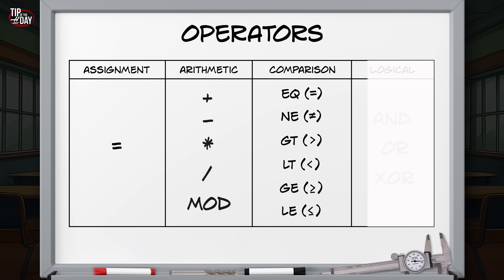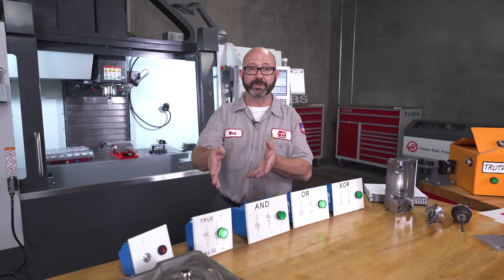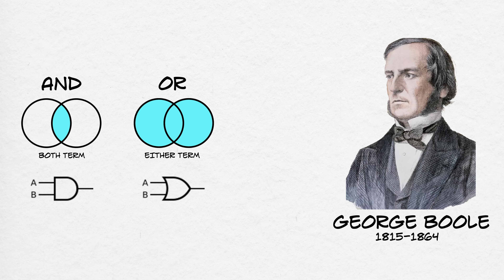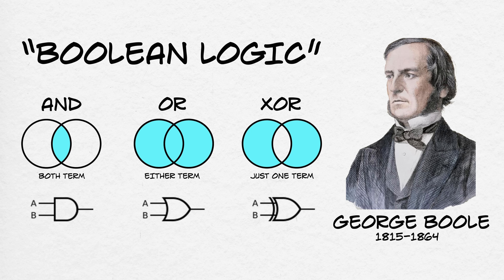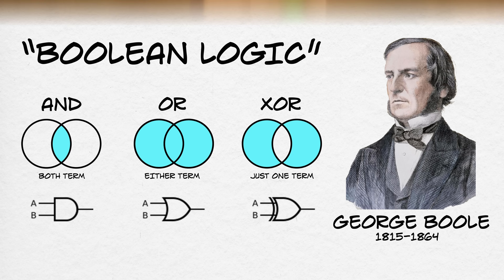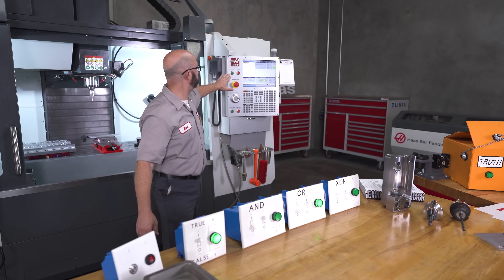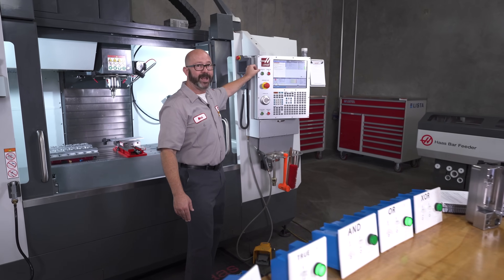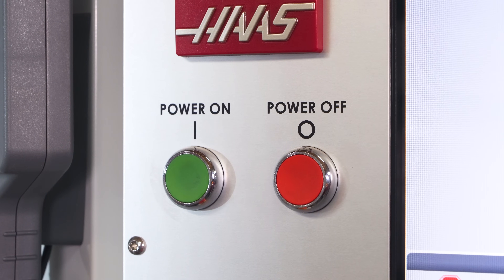The final macro operators on today's list are the logical operators: AND, OR, and XOR. Remember our light switch — ON is TRUE and OFF is FALSE. About 200 years ago, mathematician George Boole figured out a way to apply mathematical operators to logical problems. We call this Boolean logic, where all outputs are binary: either TRUE (1, on) or FALSE (0, off). Even our Haas control makes use of this logic, where the line symbol represents 1 (on) and the circle represents 0 (off).